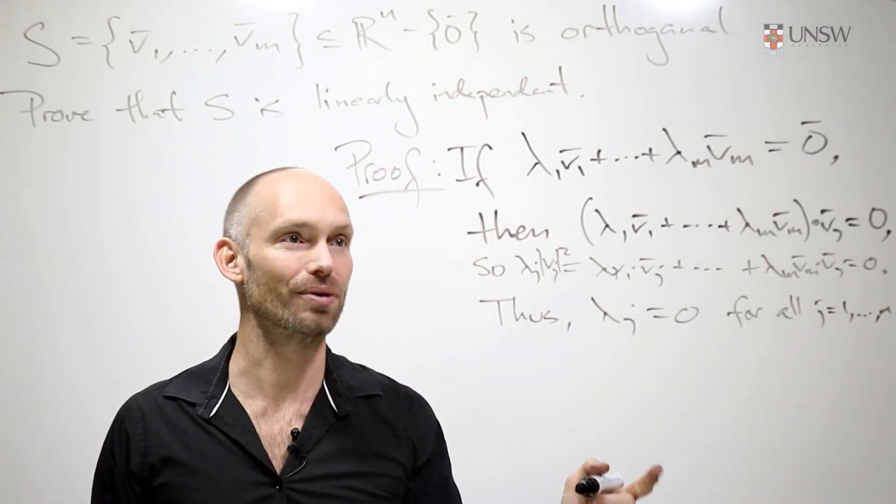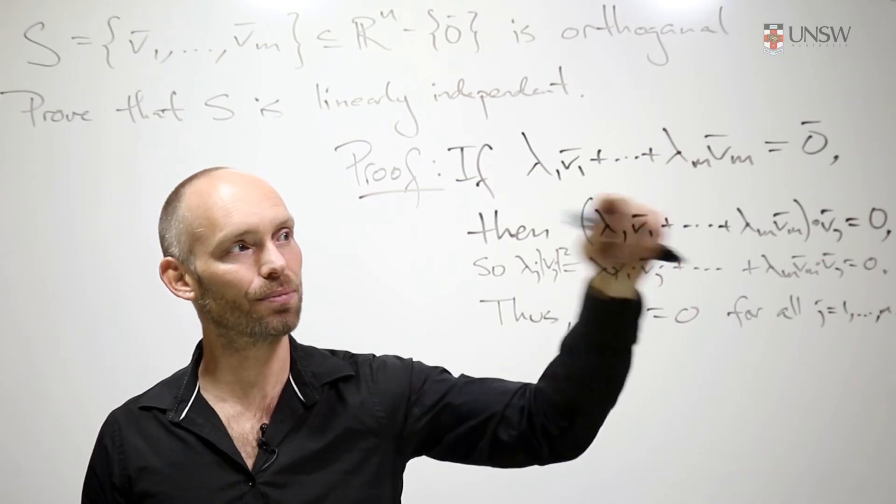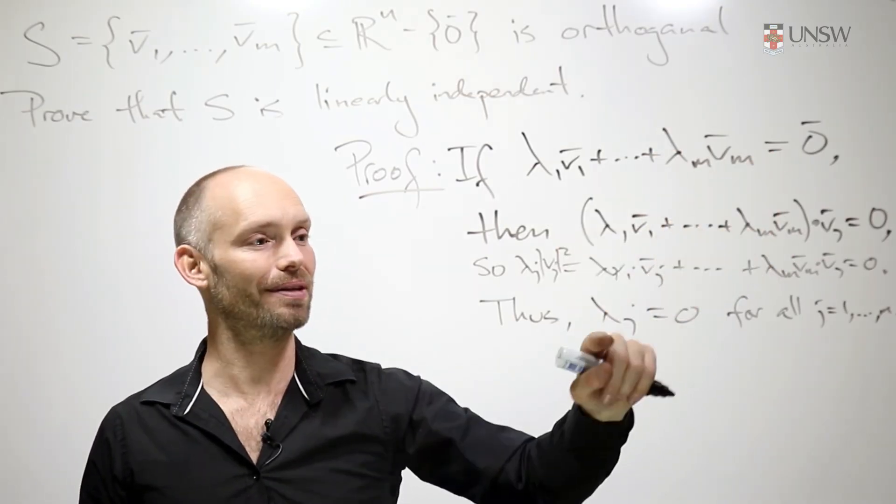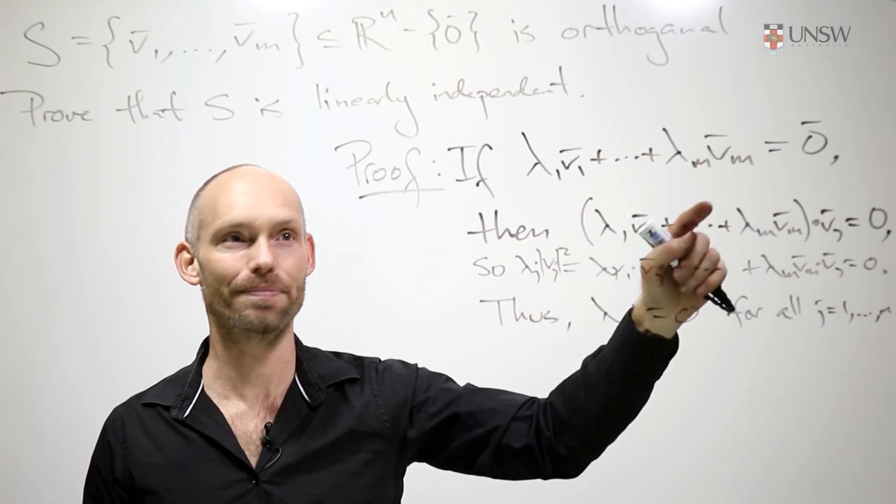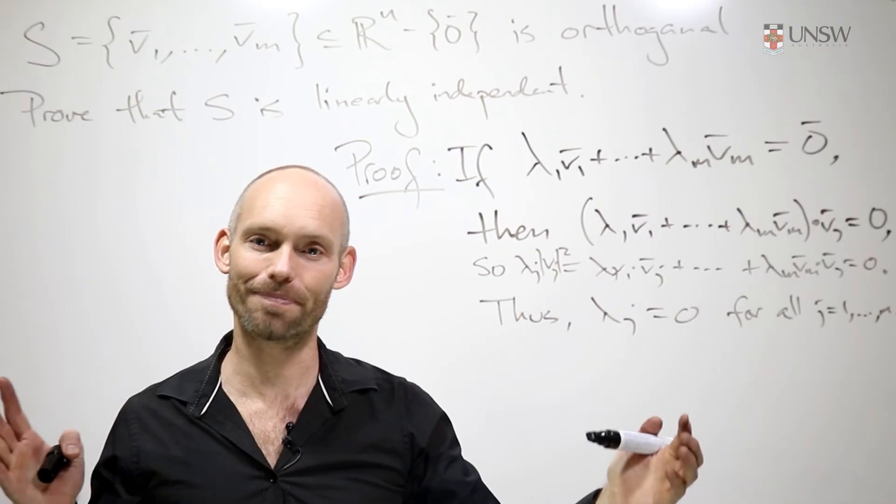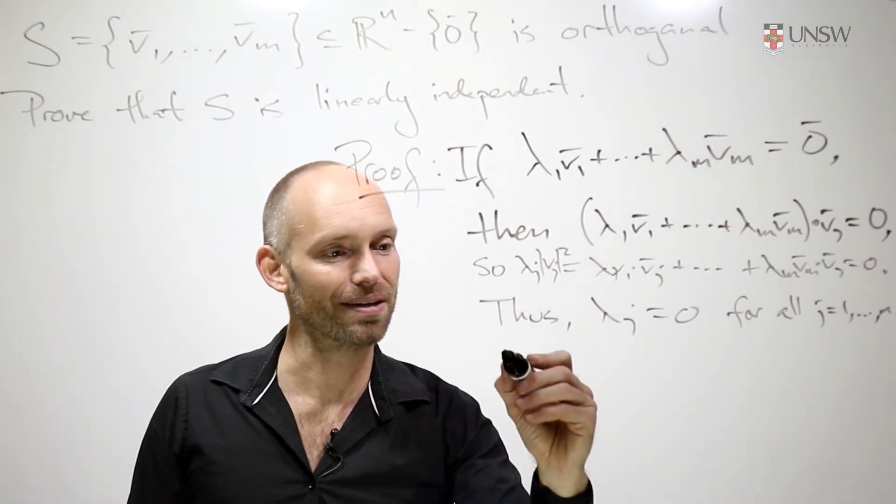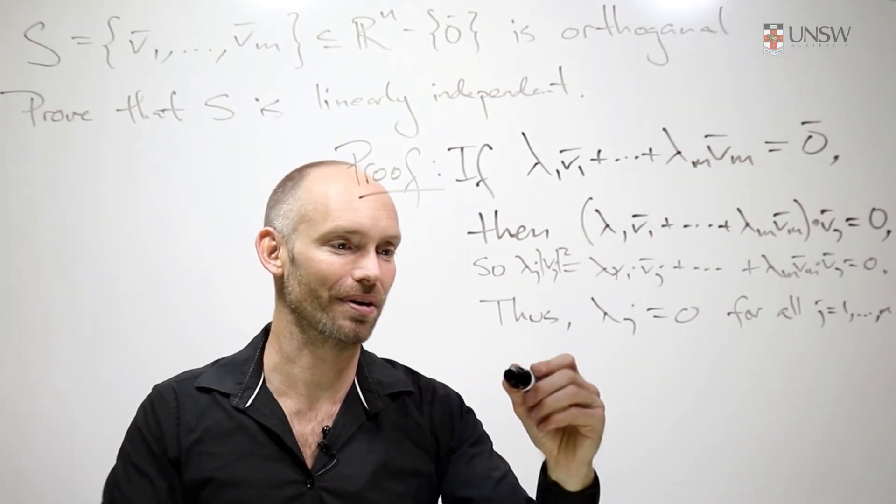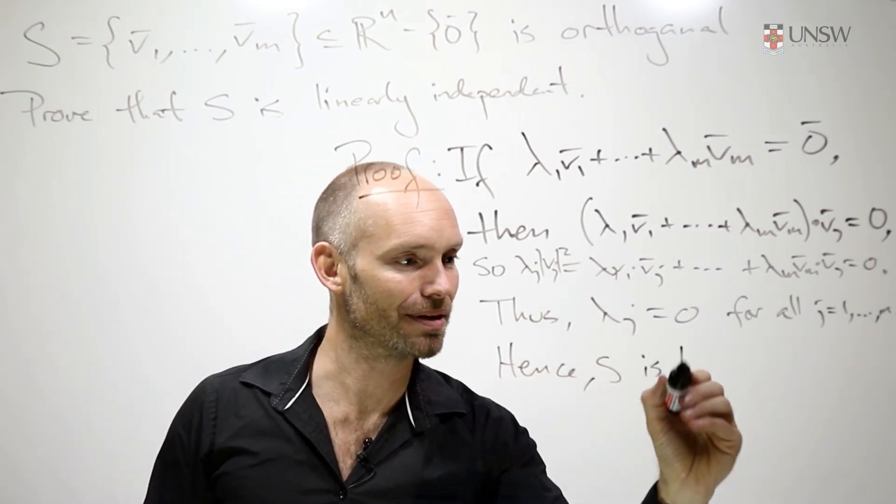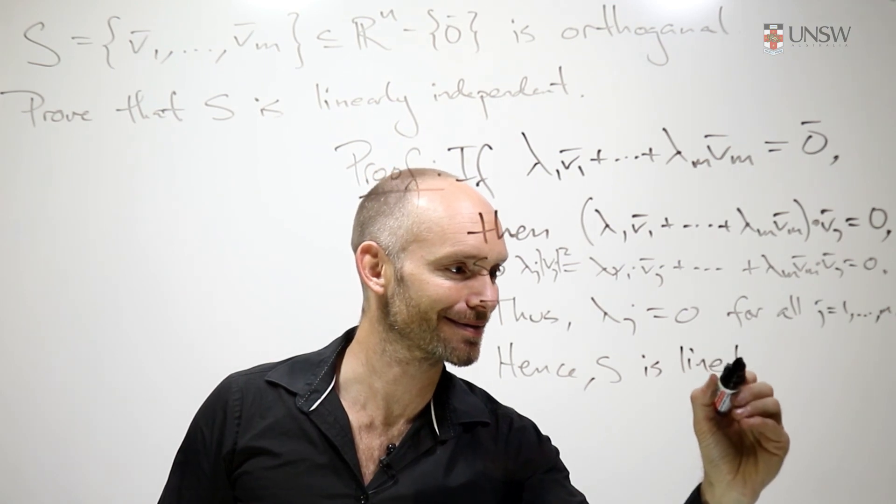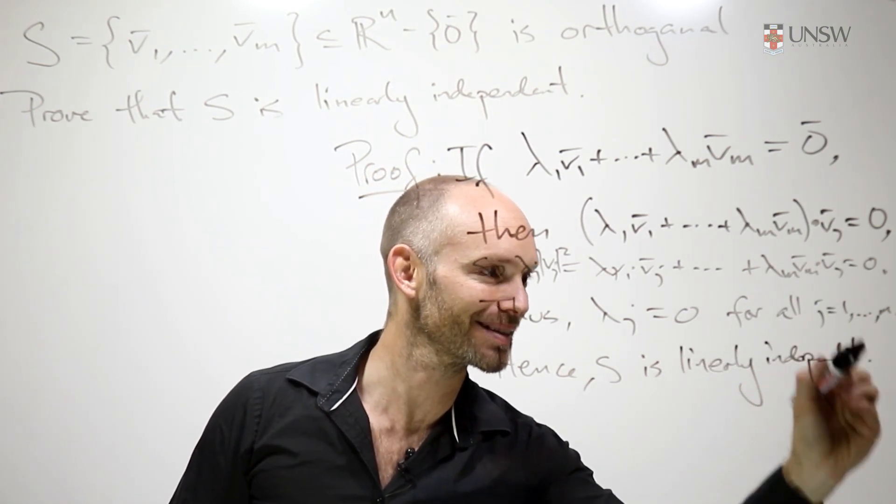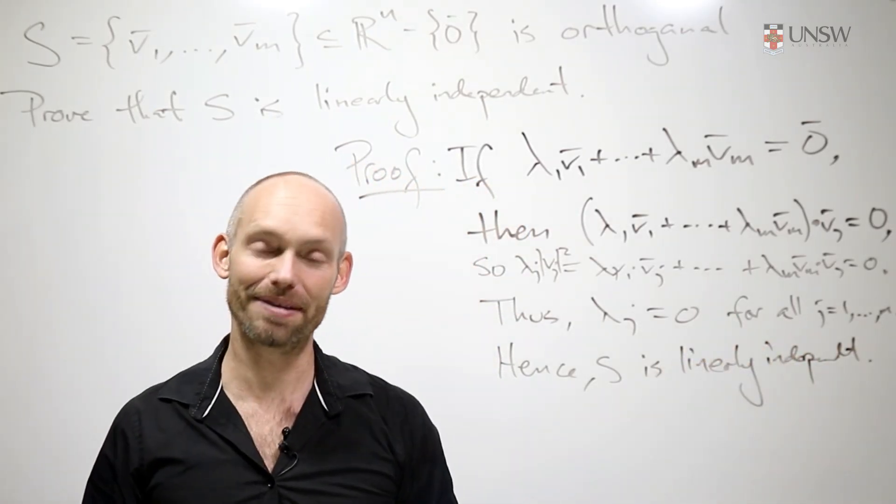And in fact, now we're done, because now we've shown that if we have a linear combination like this which gives the zero vector, well that's only possible if all of the coefficients here are zero. And that's one way of saying that S is linearly independent. And that's the proof. So just to make the proof nice, we could write it up. So hence, S is linearly independent, and we are done. Thank you very much.